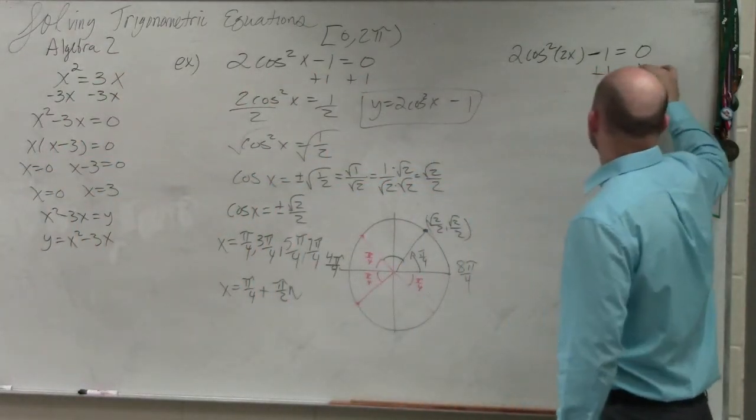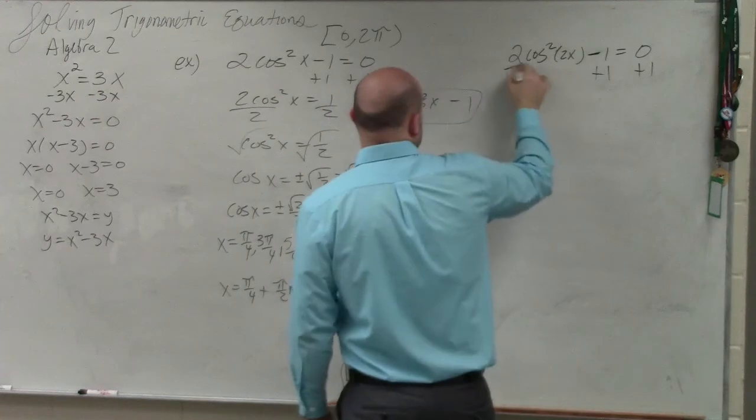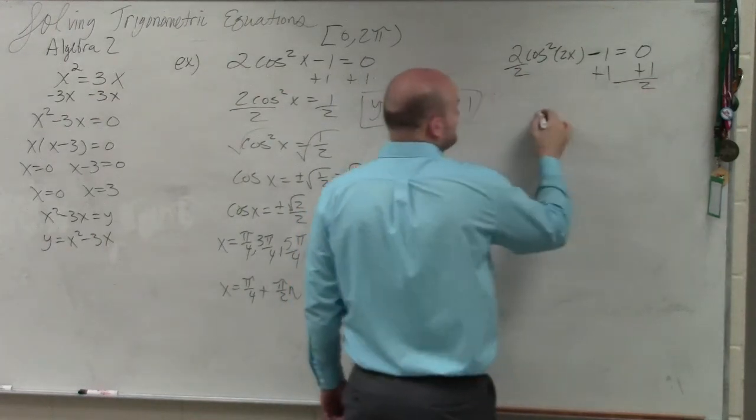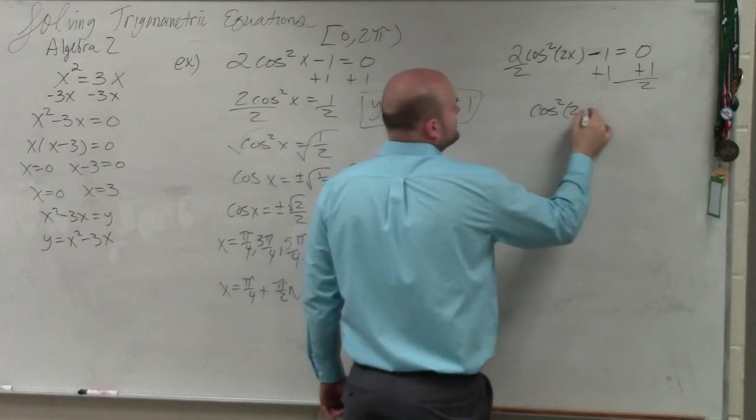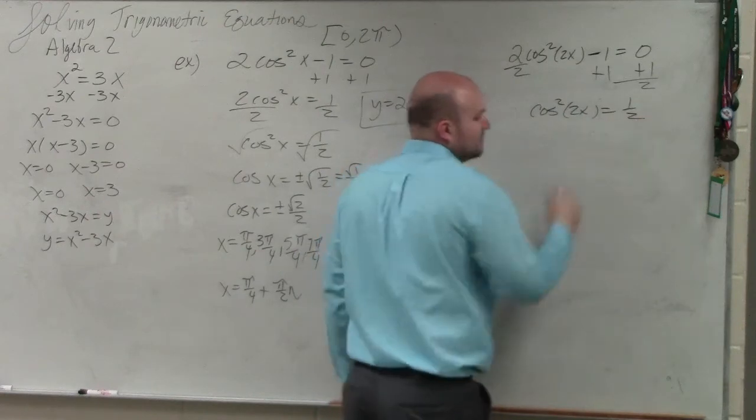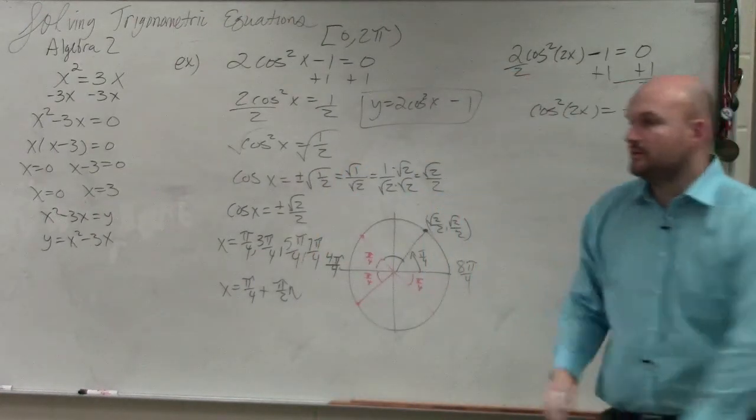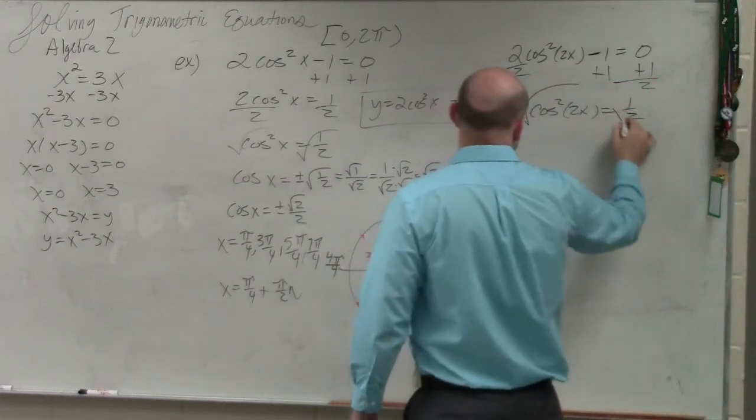So we're going to add 1 on both sides. Then we're going to divide by 2 on both sides. Cosine squared of 2x equals 1 half. Then we're going to undo the square or undersquaring by taking the square root of both sides.